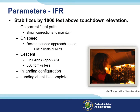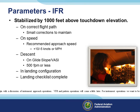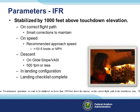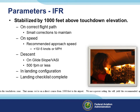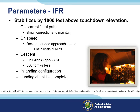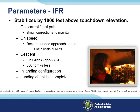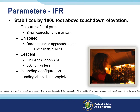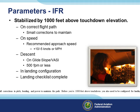We'll begin with a discussion of instrument approach operations; VFR and pattern operations will come a little later. For instrument operations, we want to be stabilized no lower than 1,000 feet above the runway on the correct flight path to the touchdown zone. That means we're on a direct course from 1,000 feet to the airport, using a power setting that yields the recommended approach speed for our aircraft in landing configuration. Maintain the glide slope on a precision approach, or not more than 500 feet per minute rate of descent. We're stable if we have to make only small corrections in pitch, heading, and power to maintain the path.